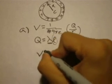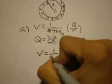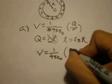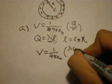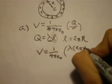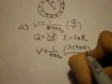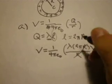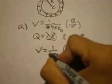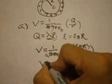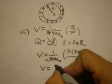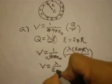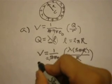Let me plug that in. So V equals 1 over 4 pi epsilon naught times lambda 2 pi R all over R. We can cancel these out. So in the end, we're left with V equals lambda over 2 epsilon naught. That is your answer.